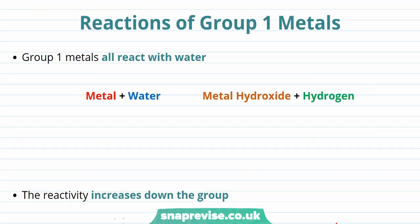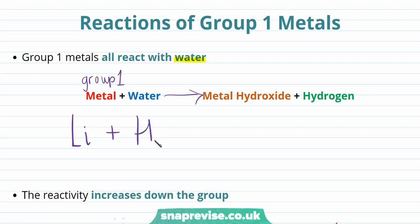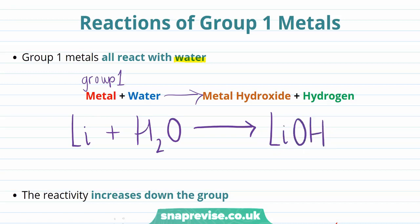We can now start to think about reactions of Group 1 metals. Group 1 metals will all react with water, and the general expression for this reaction is: Group 1 metal + water → metal hydroxide + hydrogen. The form of this reaction is exactly the same for whichever Group 1 metal. As an example, let's think about the reaction of lithium with water. On the reactant side of the equation we have lithium (chemical symbol Li) plus water, reacting together to form lithium hydroxide (LiOH) and hydrogen, which exists as the molecule H₂.